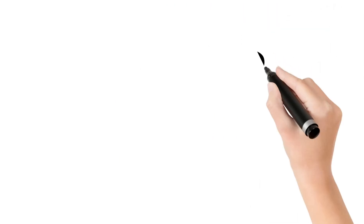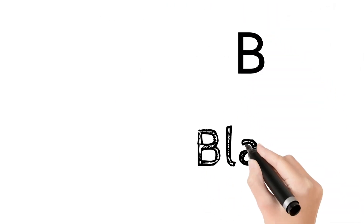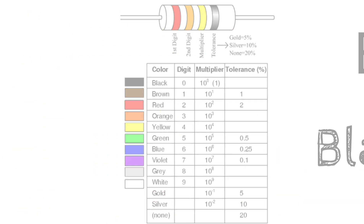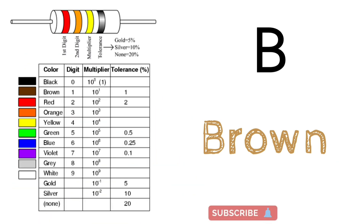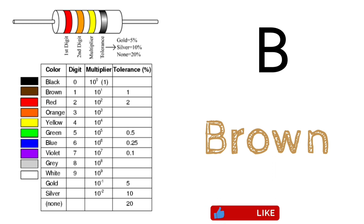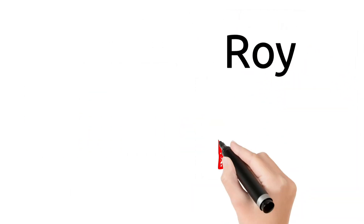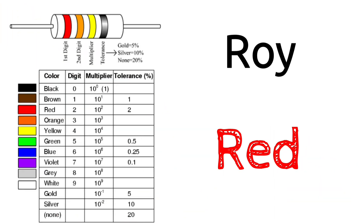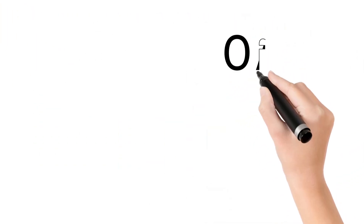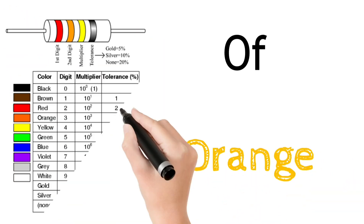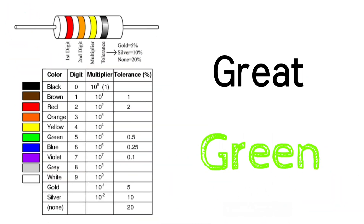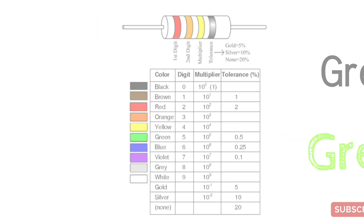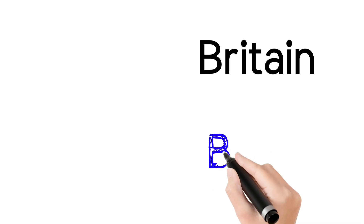We will have a mnemonic. The first part, B, represents black. The next part, B, represents brown. The third part, Roy, represents red. The next part, of, represents orange. The next part, great, represents green. The next part, Britain, represents blue.